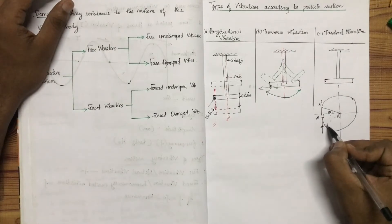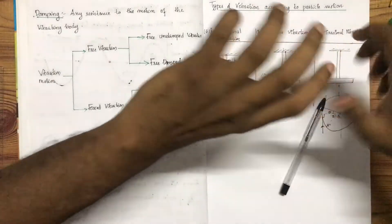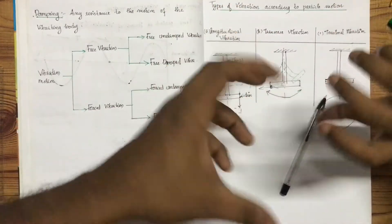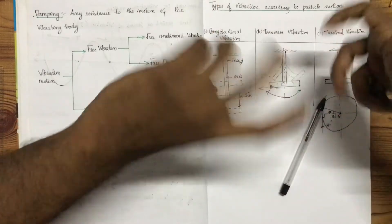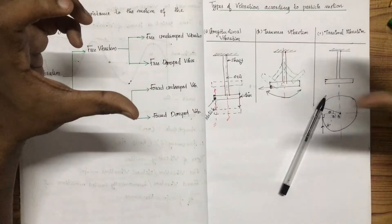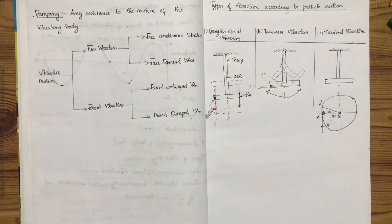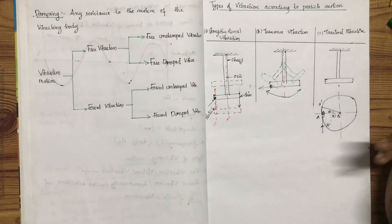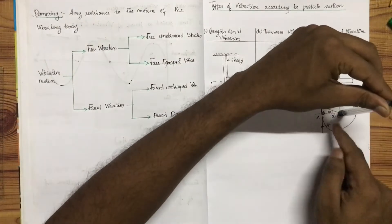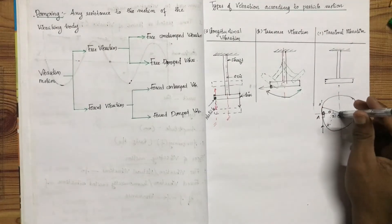With an angular deflection, the disc twists. With respect to the axis of the shaft, this particle is moving in a curved path. When the particle under vibration moves in a curved path with respect to the center axis, that is torsional vibration.